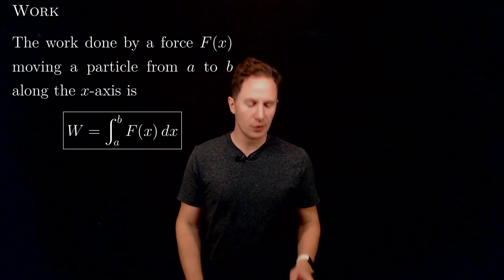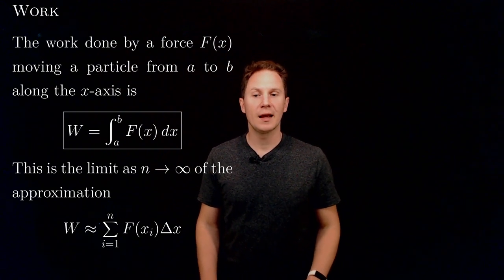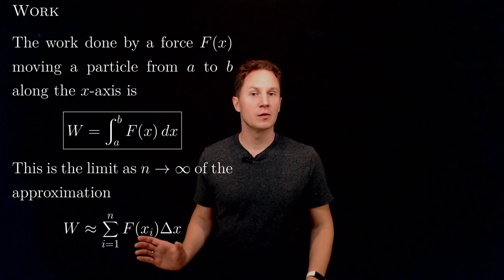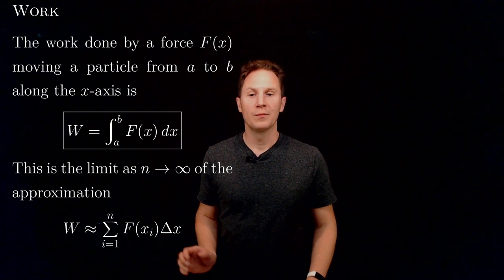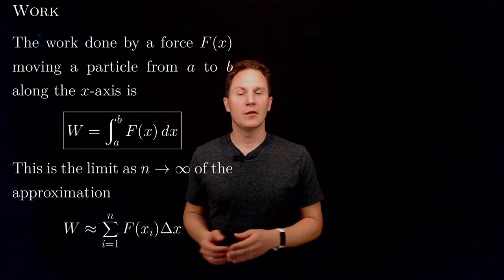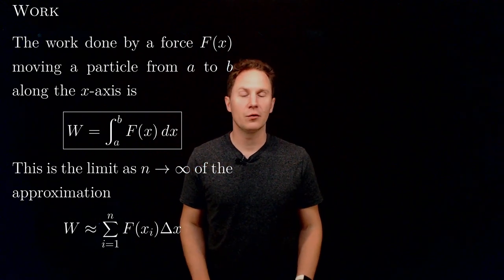This definite integral is obtained in the limit of this approximation where we take simply the sum of the forces times displacements for small delta x displacements. So as we take n, the number of terms, to infinity, delta x goes to zero and in the limit we do get the definite integral that you see there.